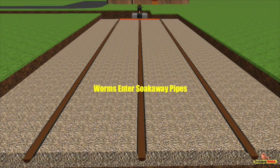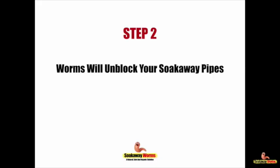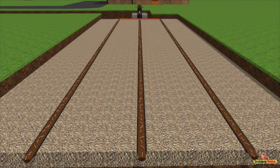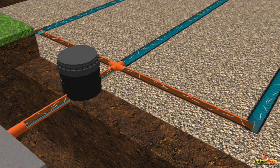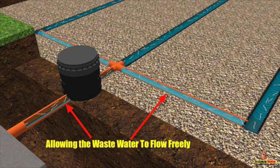In time, as the worms continue to breed, multiply and burrow through the sludge, they'll eventually penetrate your entire soak away system and unblock it completely. Once the worms are in the soak away pipes, they really start to work their magic — very quickly eating that sludge, unblocking and clearing the soak away pipes and allowing wastewater to flow freely once more, working their way all the way back through the sludge to the septic tank.